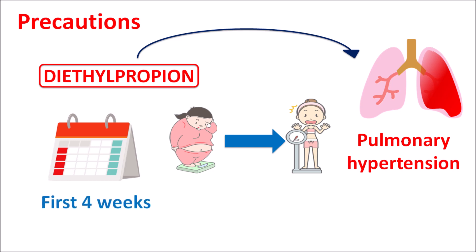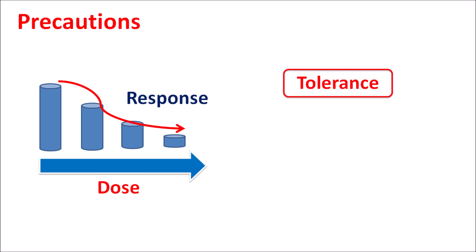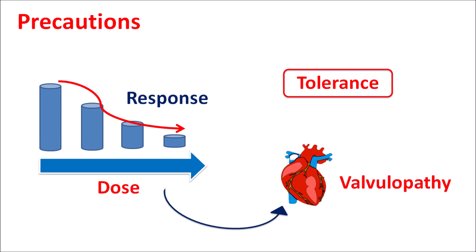Within the first four weeks of treatment, at least four pounds of weight loss should be observed with diethylpropion. Another important precaution is that with increasing doses of diethylpropion a decreased response can be observed — the drug shows tolerance towards weight loss. That's why if significant weight loss is not observed within the first four weeks, the dose should not be increased, as it further increases tolerance. Instead it should be discontinued and replaced with an alternative agent, because increasing the dose also increases the risk of valvulopathy — inflammation of the cardiac valves — which reduces cardiac functionality. Even though diethylpropion carries less risk for valvular disorder than drugs like fenfluramine (which were withdrawn from the market), it should still be given carefully at a low dose to reduce cardiovascular complications.